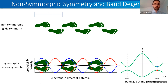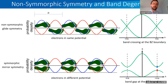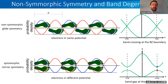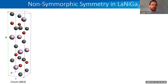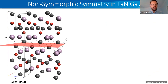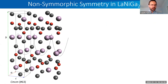With non-symmorphic symmetry, in both cases the electron sees the exact same symmetric potential, so they have the same energy — instead of a gap, you get a band crossing at the Brillouin zone boundary. LaNiGa₂ has this kind of glide plane along the c-axis, and in three dimensions there is also a two-fold screw operation where every atom in the unit cell is related to another atom under this screw operation.